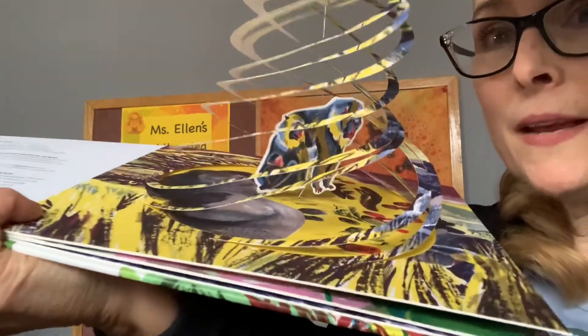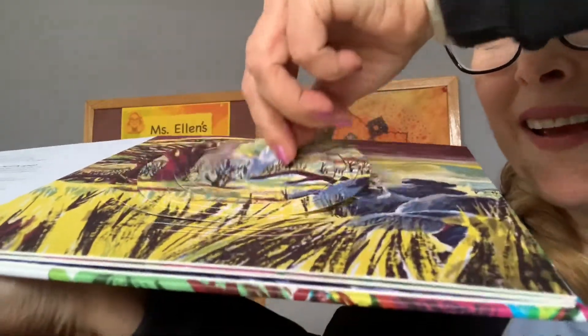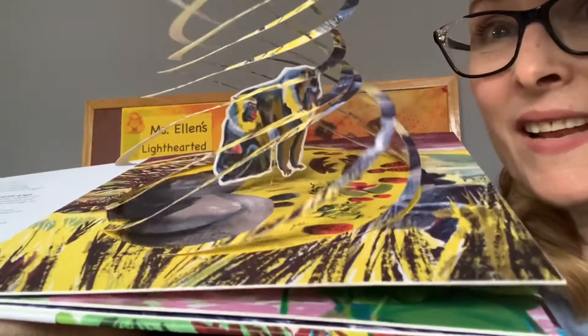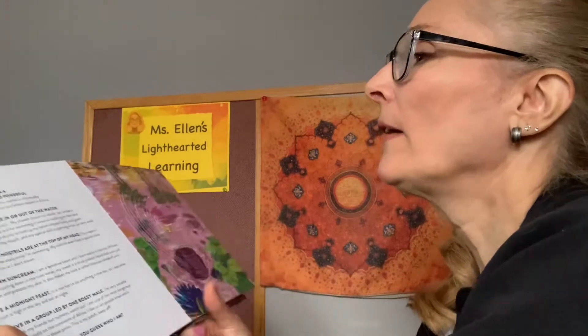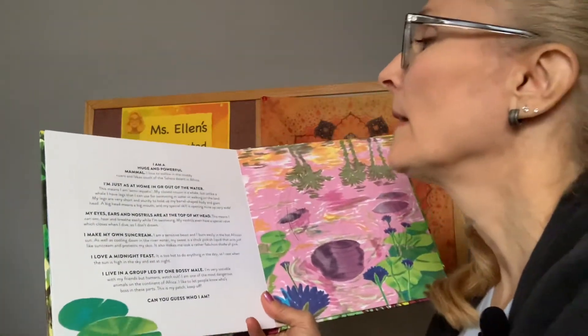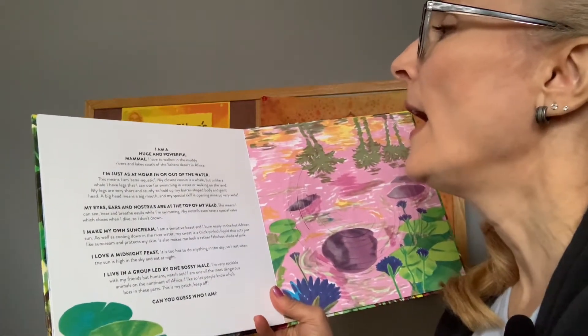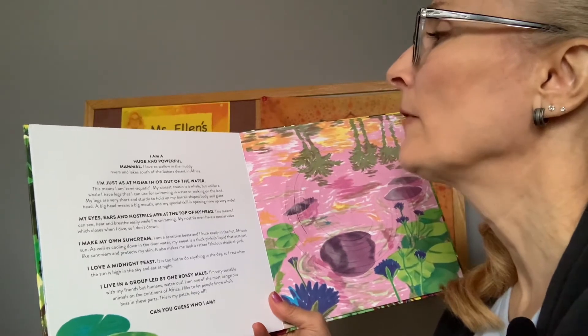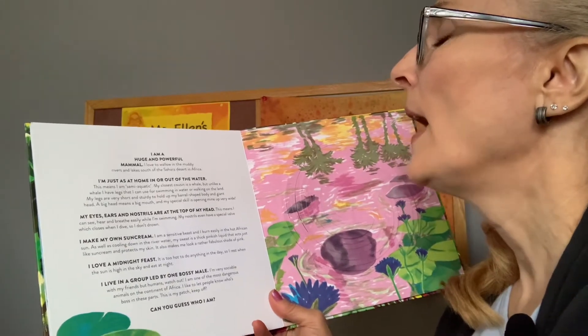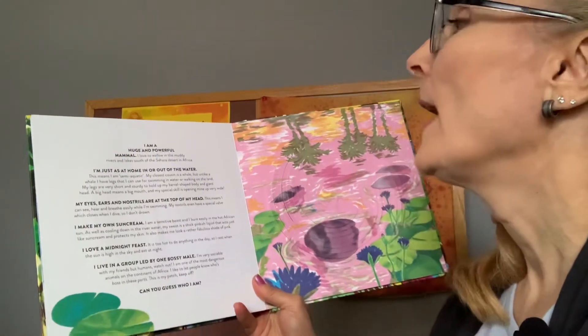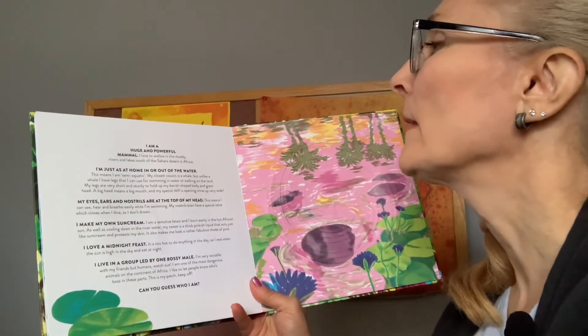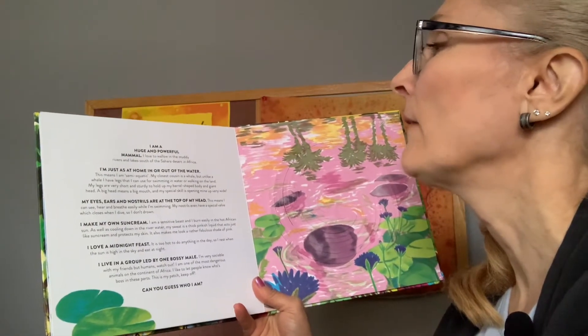Did you get it, boys and girls? It's a mandril monkey! Did you see that? I bet you got that one too. All right, here's another habitat. I am a huge and powerful mammal. I like to wallow in the muddy rivers and lakes south of the Sahara desert in Africa.